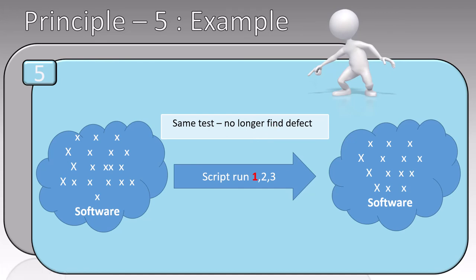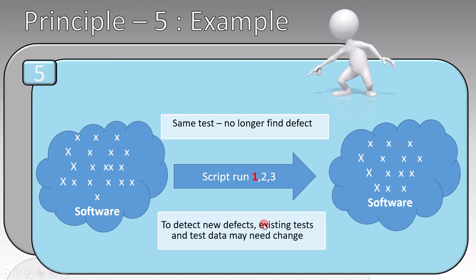No matter how many times you run it, you cannot find the 15 remaining defects, because you're running the same script. To find new defects, you have to update your script. This is why the first point said that the same test will no longer find defects, and the second one said that to detect new ones, existing tests may need to change. This is all about the fifth principle — beware of the pesticide paradox.